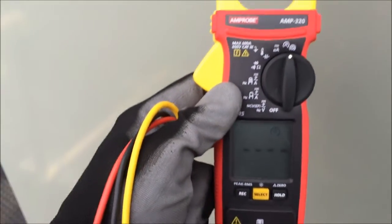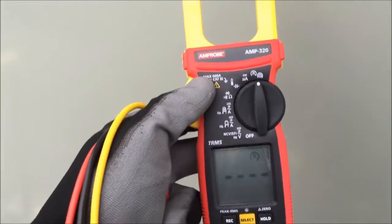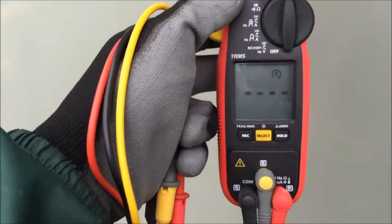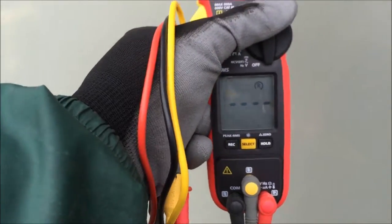So again, that is the Amprobe AMP 320, that is the phase rotation feature, and pretty neat little feature to have if you work on three-phase equipment.